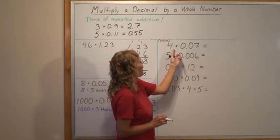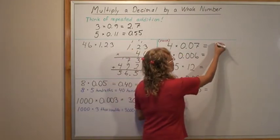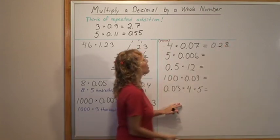Now 4 times 7 hundredths. We get 28 and it is hundredths. So two decimals.